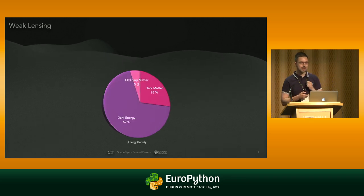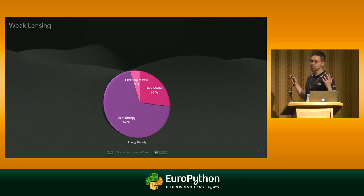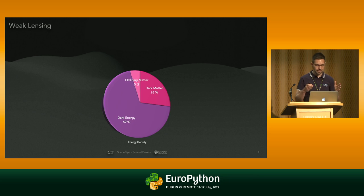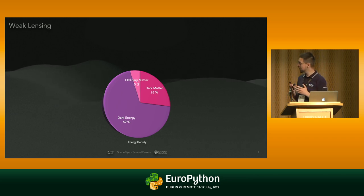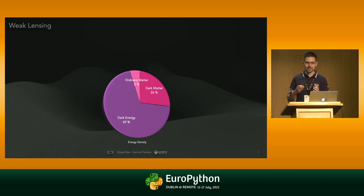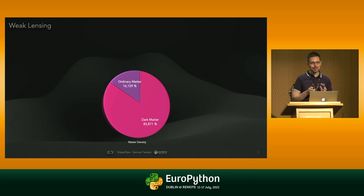So, weak lensing — this is in the title and you need to understand this to understand what we're talking about. Our current model for the universe in terms of energy density has this kind of distribution: over two-thirds of the energy density is in a form we call dark energy, another quarter is dark matter, and only five percent is what we call ordinary matter. Dark energy is sublimely fascinating — it's what drives the accelerated expansion of the universe — but we're going to focus on the matter side of things, specifically ordinary matter and dark matter.